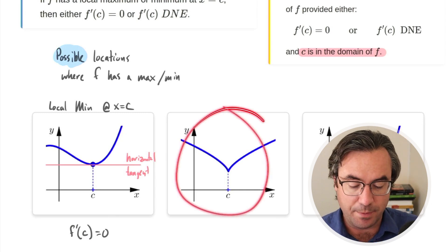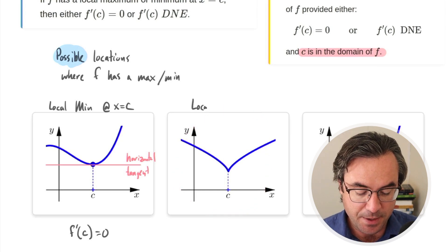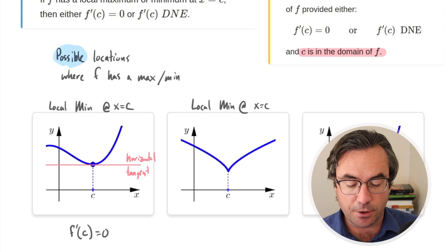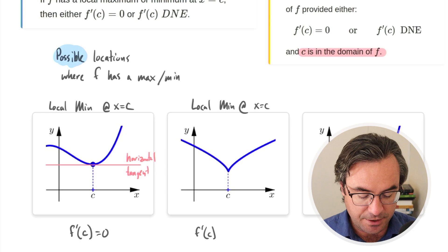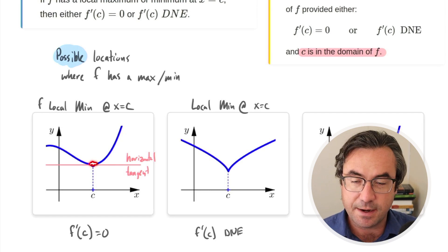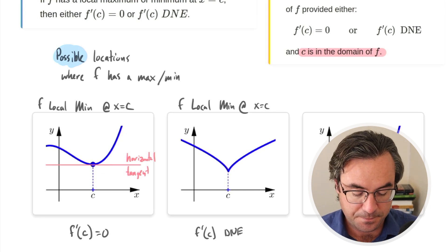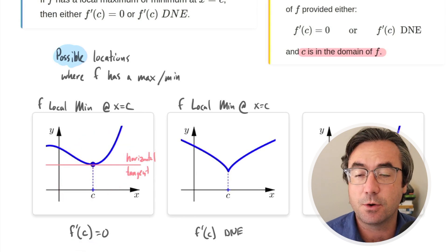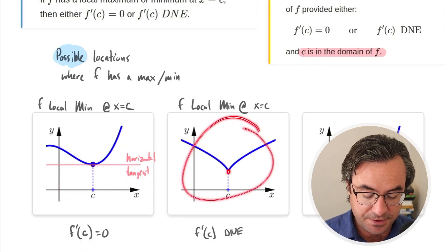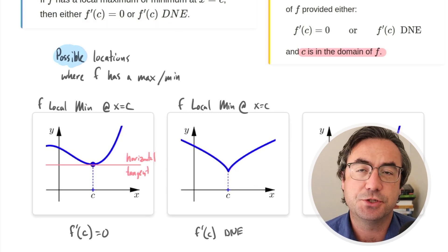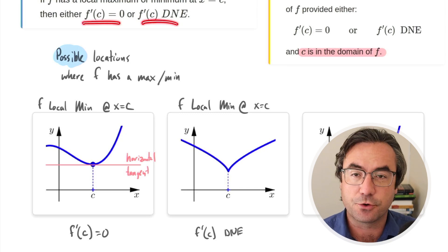In the second graph, we also have a local min at x equals c, but something very different is happening. We have a sharp change in the slope — when we have a cusp or a corner, this is where our derivative is undefined. So the original function f has a local min at each of these points: in the first case the derivative is equal to zero at the local min, and in the second case the derivative is undefined at the local min.